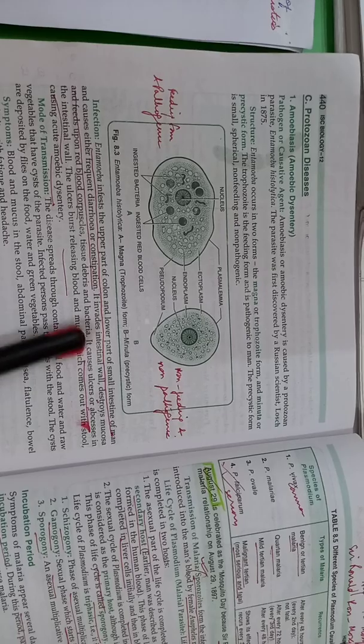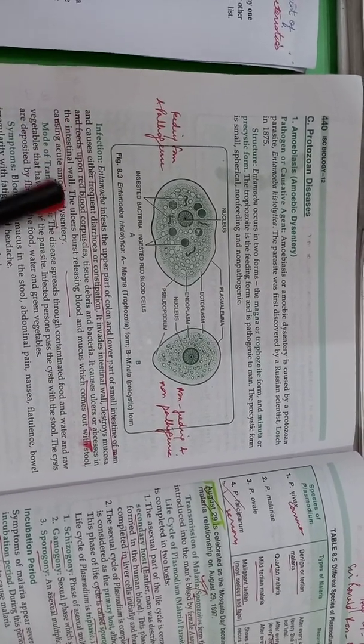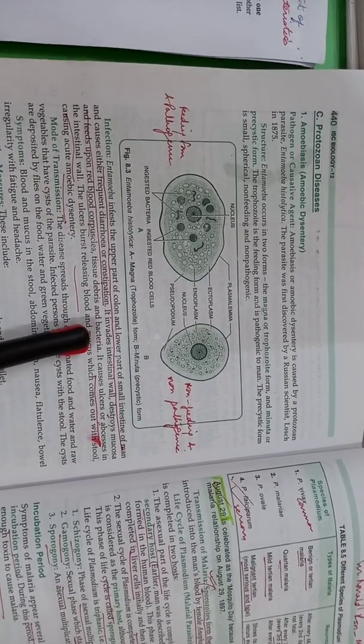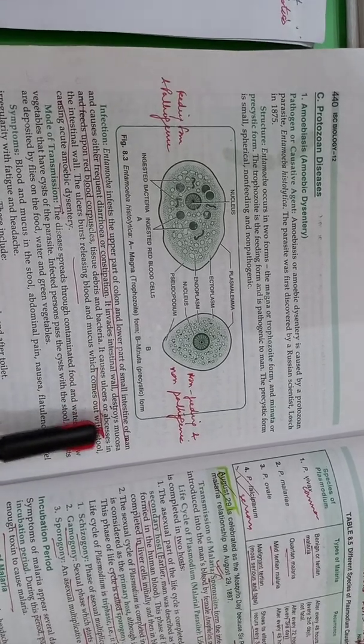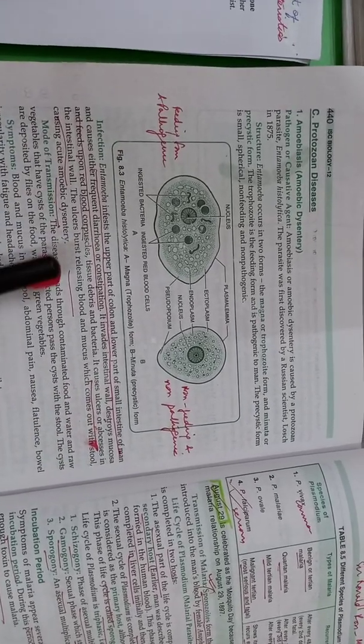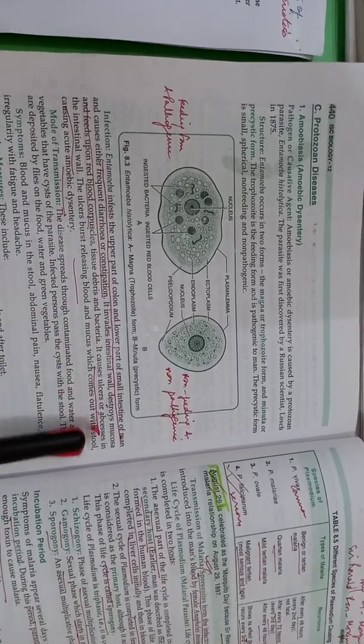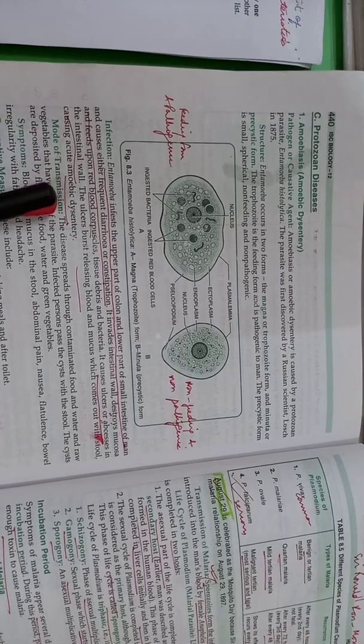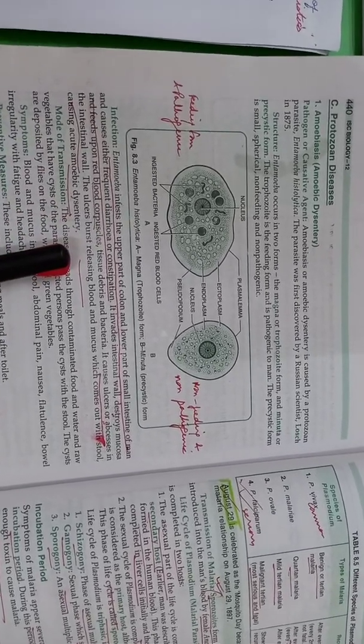Then this may also attack the intestinal wall, destroy the mucosa or the lining and feed upon the red blood cells, tissue debris and bacteria. It causes ulcers or abscess in the intestinal wall and the ulcer sometimes burst releasing the blood and mucus which comes out with the stool causing amoebic dysentery. This is what your practical study is all about.